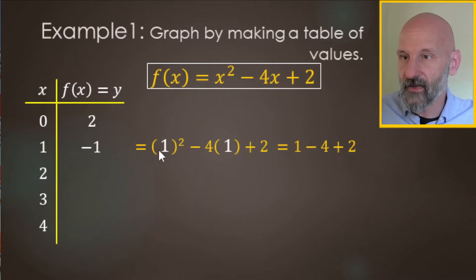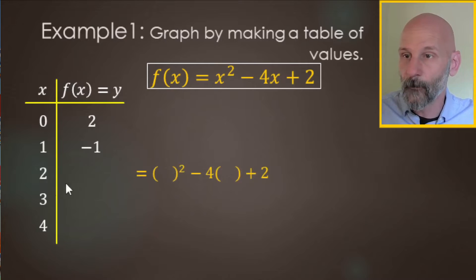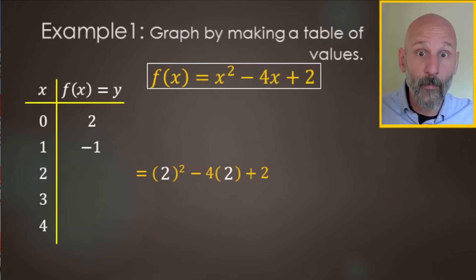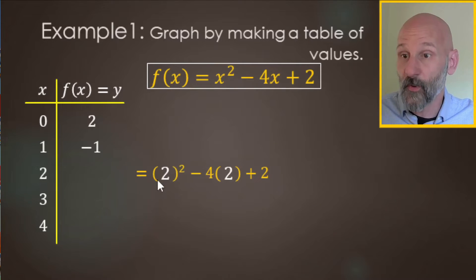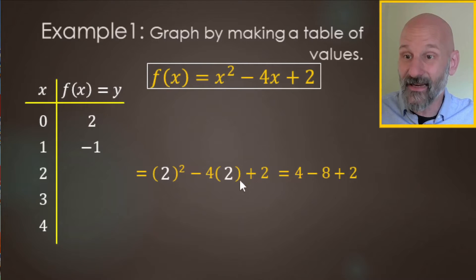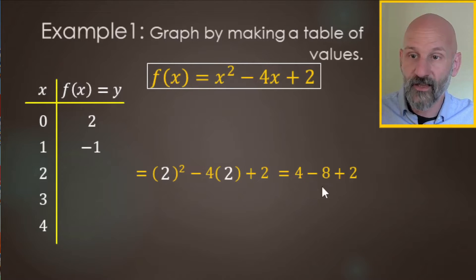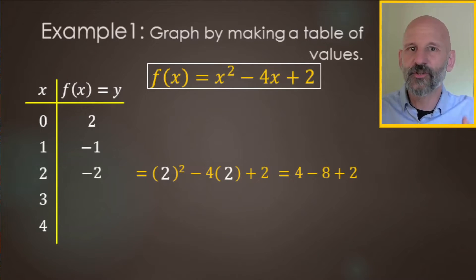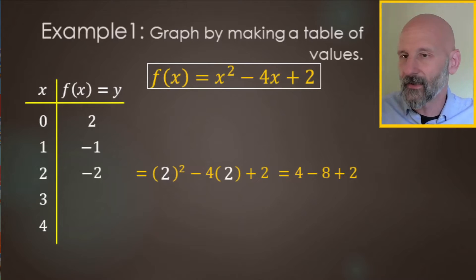Next, we put twos in for x: two squared minus four times two plus two. Exponents first — two squared is four, minus four times two is eight, plus two. Four plus two is six, minus eight gives negative two.